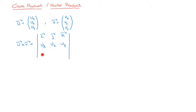Finally, the third row of the matrix is made of the components of the second vector in the product, so that's V, and its components are V1, V2, V3. All we have to do now is expand this determinant.